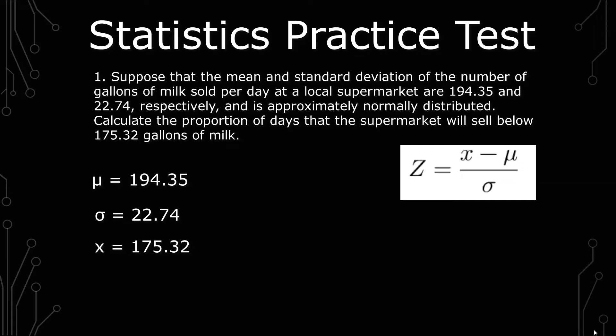So we have Z equals X minus mu over sigma and we have everything we need. We have 175.32 is X minus 194.35 is mu. After that subtraction divided by 22.74 and that gives you the Z-score which is negative 0.83685.